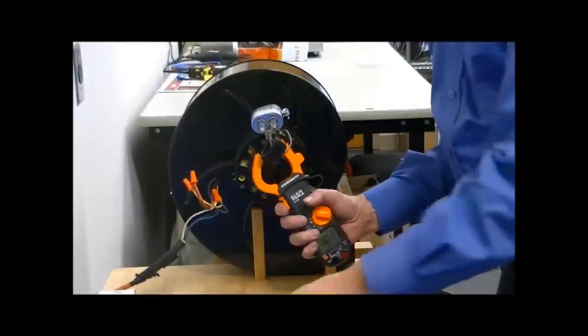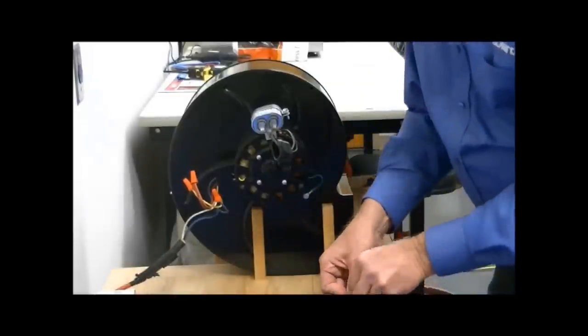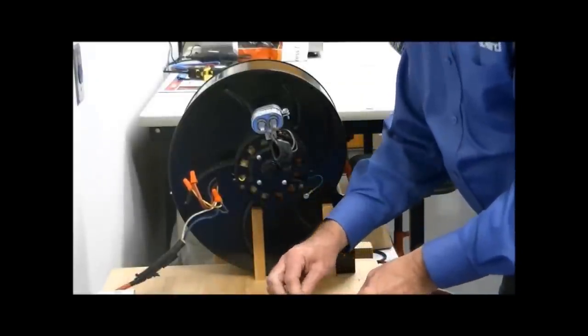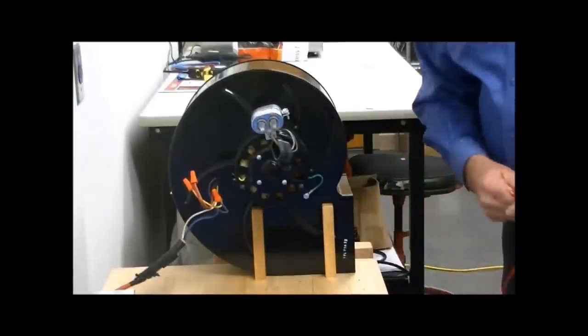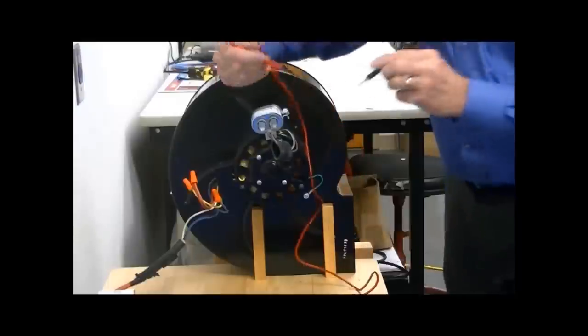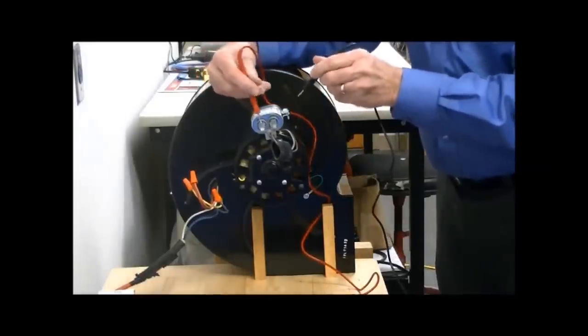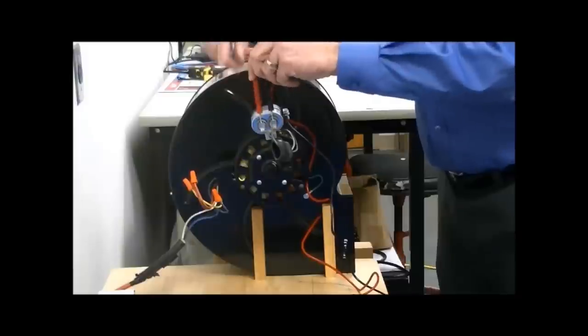Now to check the capacitor volts, set your meter to AC volts. With your probe, connect one on one side of the capacitor, the other on the other.